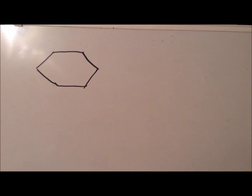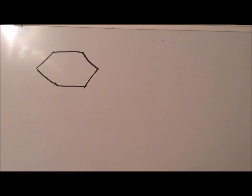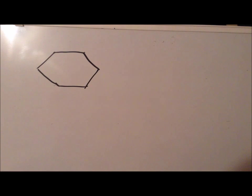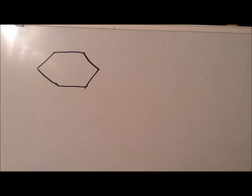Another important shape that finds tremendous utility in chemistry is the hexagon. Here we have an attempt at drawing a regular hexagon, which should have six sides, all the same lengths, and six equal angles.